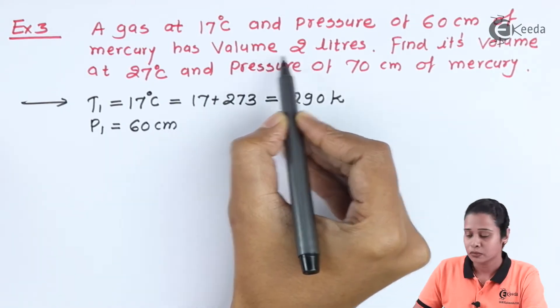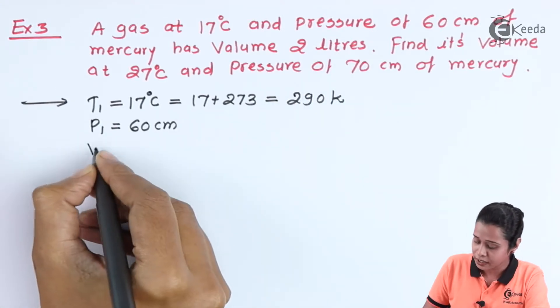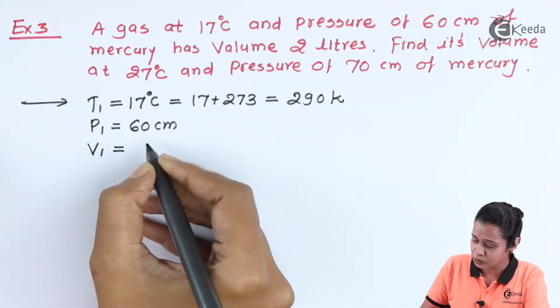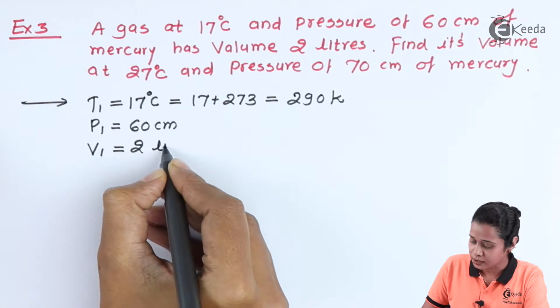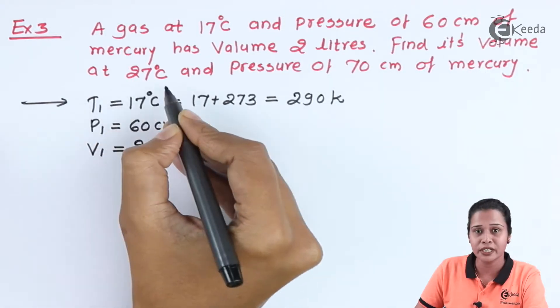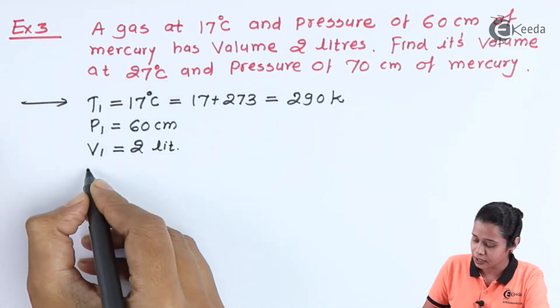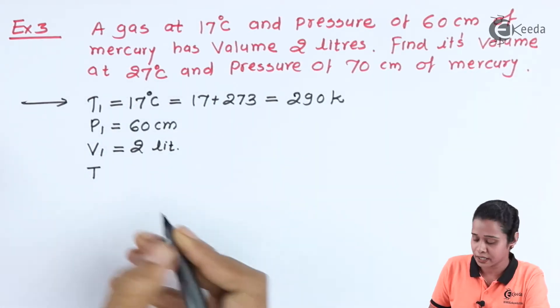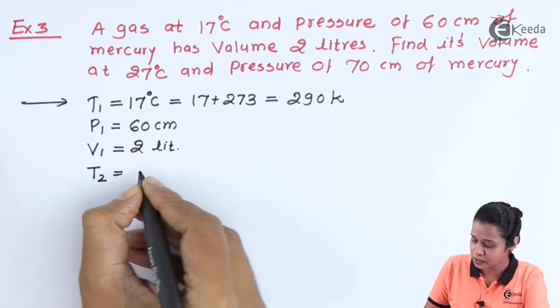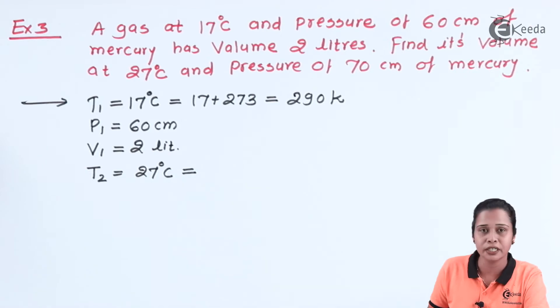The volume of gas is 2 liters, so we will write V1 is equal to 2 liters. Find its volume at 27 degrees Celsius, so we have to find V2 at temperature 27 degrees Celsius. This means T2 value is 27 degrees Celsius. Let us convert it into Kelvin.